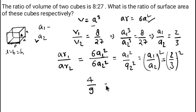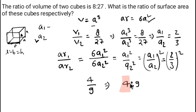So the area of the first cube to the area of the second cube is 4:9. That's how we solve this question. That's all for today — thank you for watching, bye bye and take care.